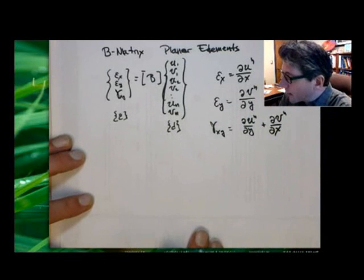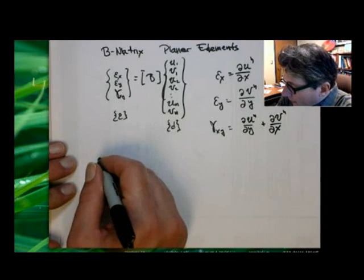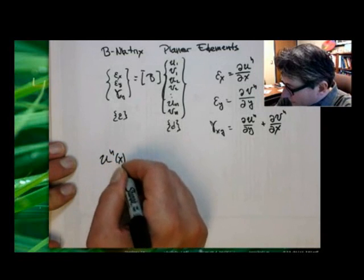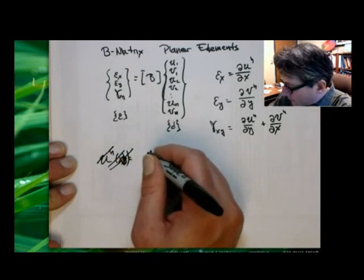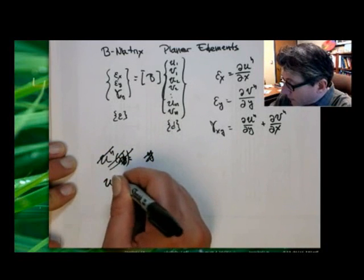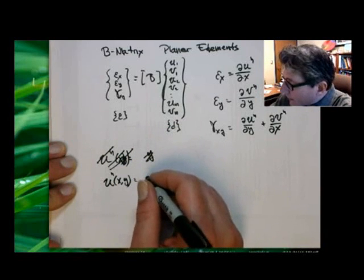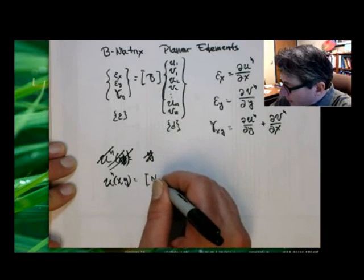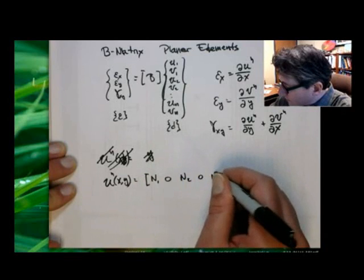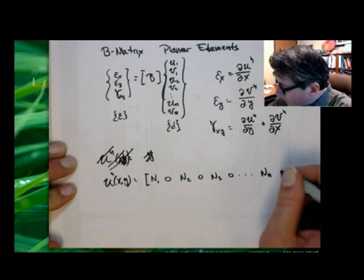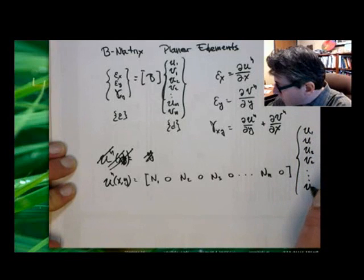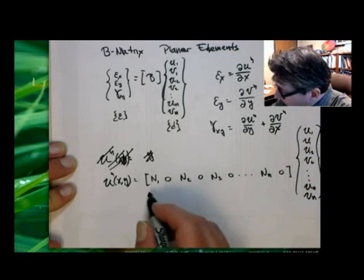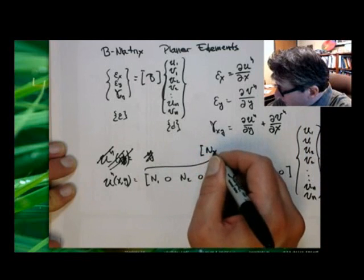Let me define a couple other matrices. U of X and Y — the approximation — can be written as follows: N1, 0, N2, 0, N3, 0, ..., to the Nth node, 0, times the displacement vector D — that's U1, V1, U2, V2, ..., UN, VN. I'm going to define this as NU, a vector of shape functions that interpolates the displacement in the X direction.